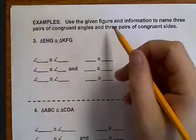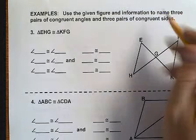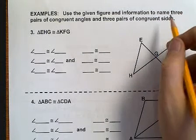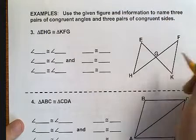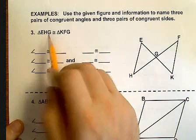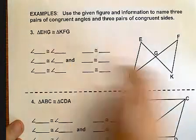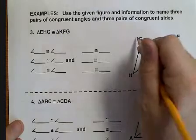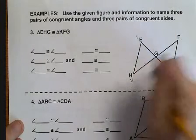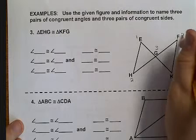Let's talk about example number 3. Here they give us some pictures and we need to figure out some information to decide what's congruent. And they tell us that EHG is congruent to KFG.